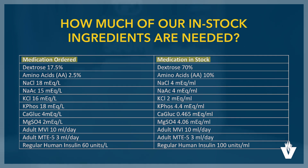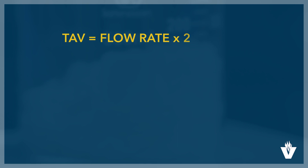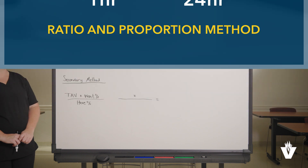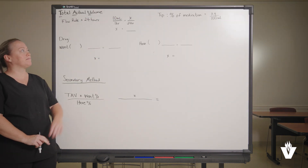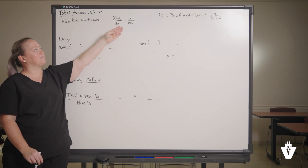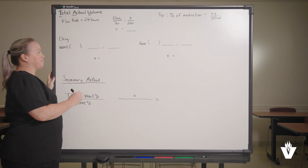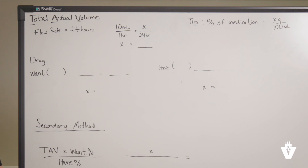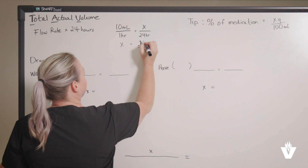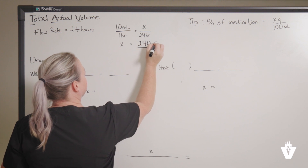The first calculation is to find the total actual volume based on the flow rate provided in the order. Since we know the flow rate, we can use the ratio and proportion method to find the total amount of milliliters needed in a 24-hour period. We set up the proportion by placing the flow rate of 10 milliliters over one hour on the left side of the equation, and the unknown milliliters over 24 hours on the right side. Cross-multiply, then divide and solve for X. X equals 240 milliliters, which is the total actual volume of the TPN solution for this order.